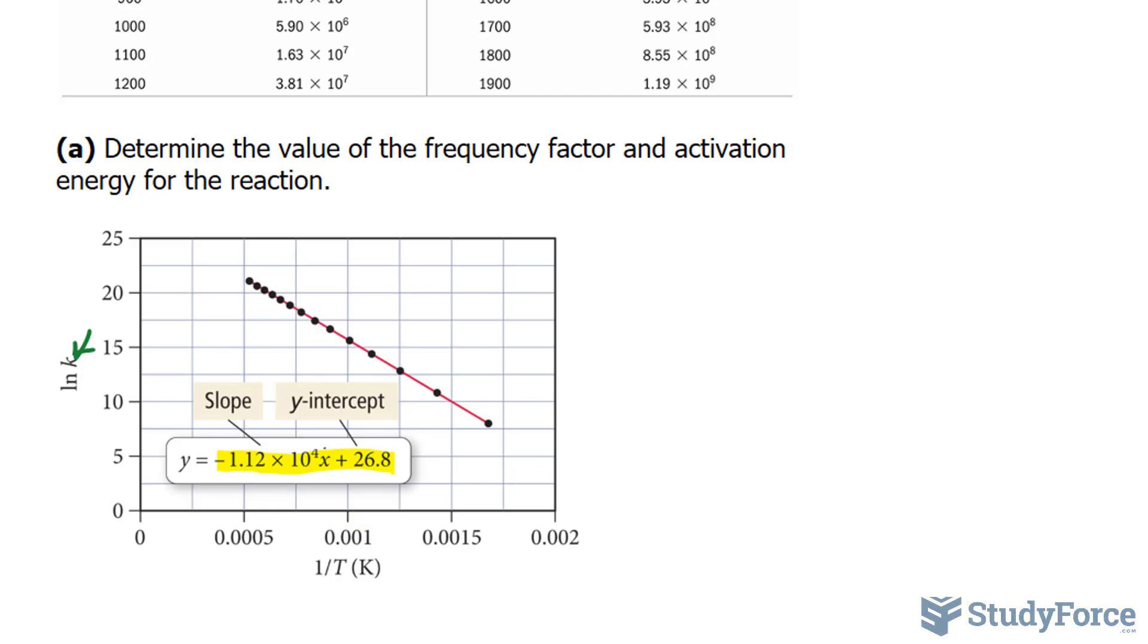You would end up with negative 1.12 times 10 to the power of 4. That particular part is your slope. And 26.8 would be your y-intercept. So if we were to hypothetically extend this line where it touches the vertical axis, it would actually cross at 26.8. There's a reason why this information is important.